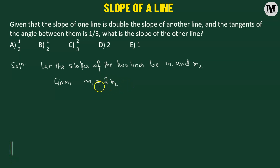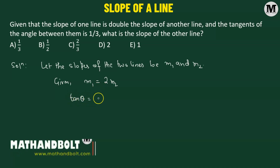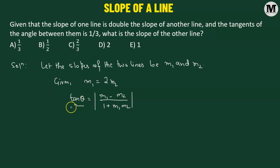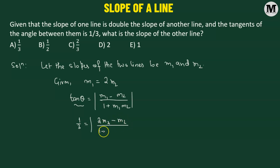The angle between the two lines is given by the formula: tangent of theta equals the absolute value of m1 minus m2 divided by 1 plus m1 times m2. It is given that the tangent of the angle between the two lines is 1 over 3, which means 1 over 3 equals the absolute value of m1 minus m2 over 1 plus m1 times m2. Let's replace m1 with 2 times m2, giving us 2m2 minus m2 divided by 1 plus 2m2 multiplied by m2.